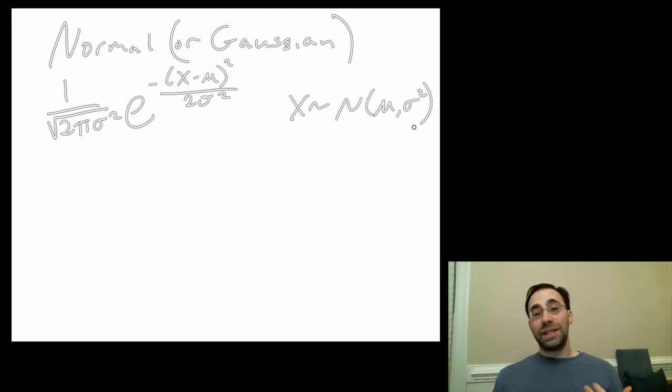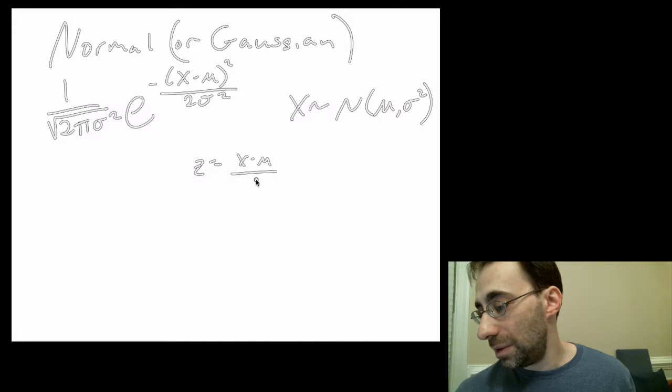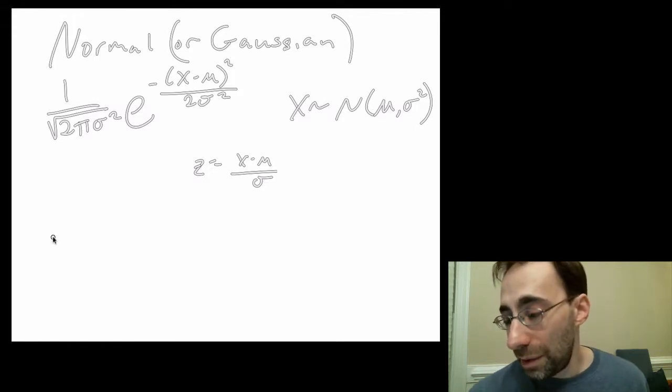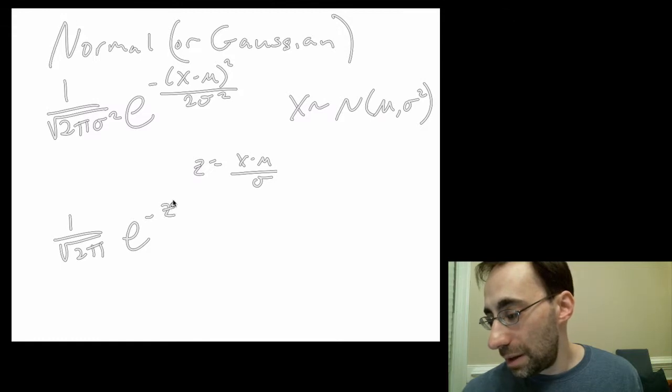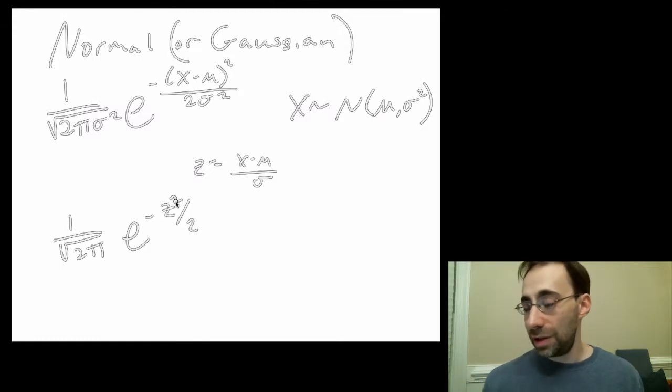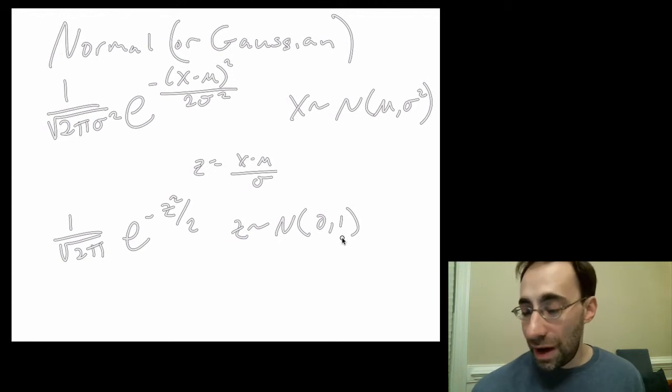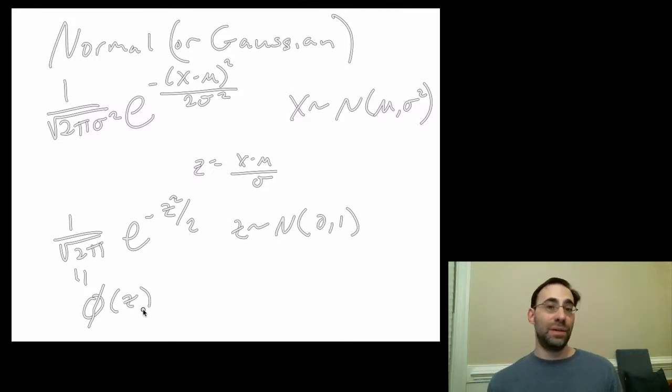Oftentimes, we see the standard normal used because you can transform this normal into a standard normal, creating what's called a z-score by making z equal x minus mu over sigma. If you plug it in, you get negative z squared over 2, and you can rewrite the whole thing as 1 over the square root of 2 pi. The sigma squared goes away when you change the variables, and you just get z squared over 2. This is a standard normal distribution. We would say z is distributed N(0, 1). And this thing is actually used so commonly, it has its own name. Phi of z here is the function name often applied to the standard normal distribution PDF.